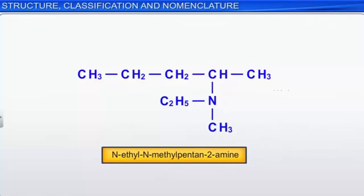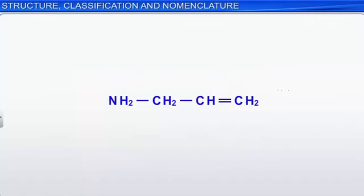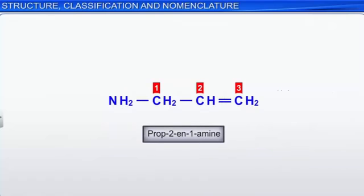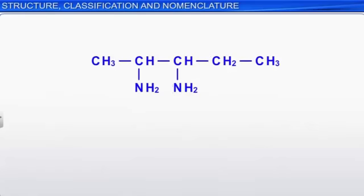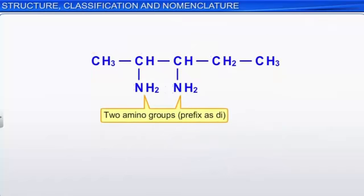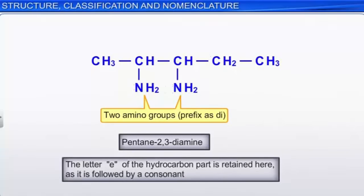In this compound, apart from the amine group, there is a double bond in the carbon chain. If a functional group and multiple bonds are present in the carbon chain, then the numbering should be done so that the carbon bearing the amine group gets the lowest number. For example, allyl amine is named prop-2-en-1-amine. If the compound has more than one amino group on different carbon atoms, then the numbering should give the sum of locants the least value, and a suitable prefix such as di- or tri- is attached to the suffix amine. Thus, the name of the compound is pentan-2,3-diamine.